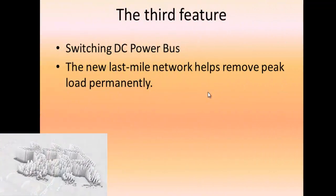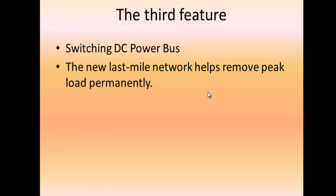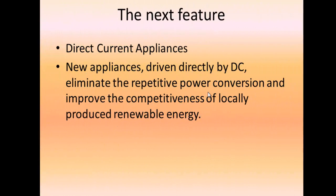The third feature of Alancity is tweaking the DC power bus. We have a new last-mile network that has removed peak load permanently. The next feature is direct current appliances. It has new appliances driven directly by DC, which eliminate repetitive power conversion and improve the competitiveness of locally produced renewable energy.